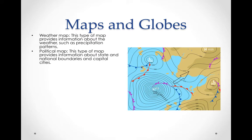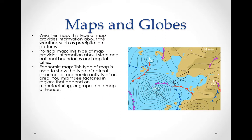Political maps show information about the state and national boundaries and cities. Economic maps show the type of natural resources and economic activity occurring in those areas. For instance, if it's industrial, you might see a little factory. If there are vineyards, you might see a little group of grapes.